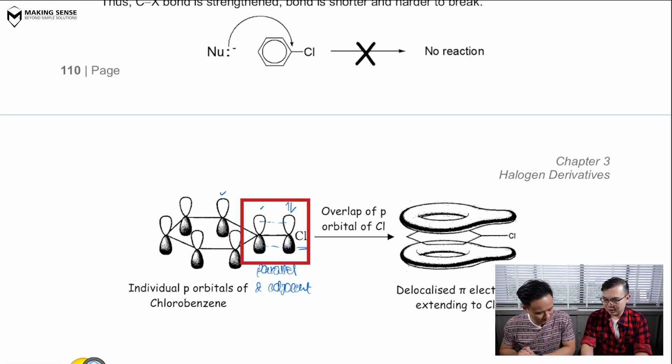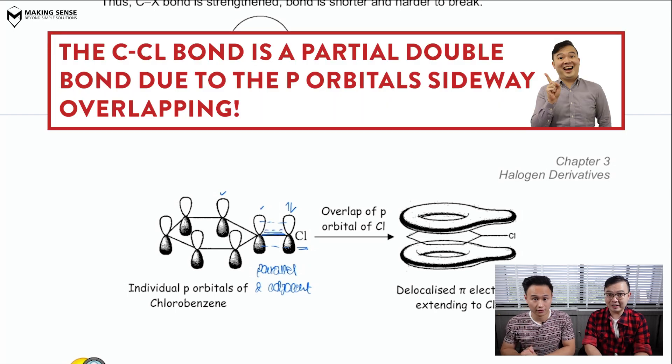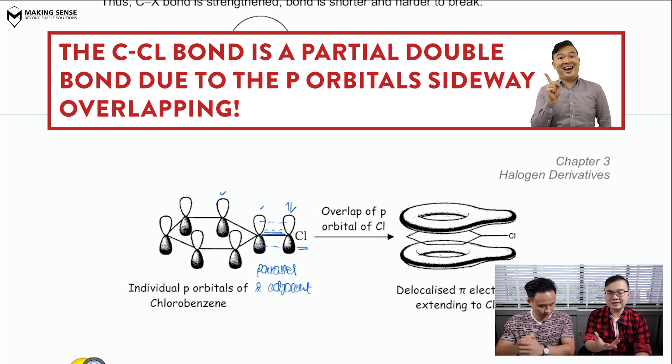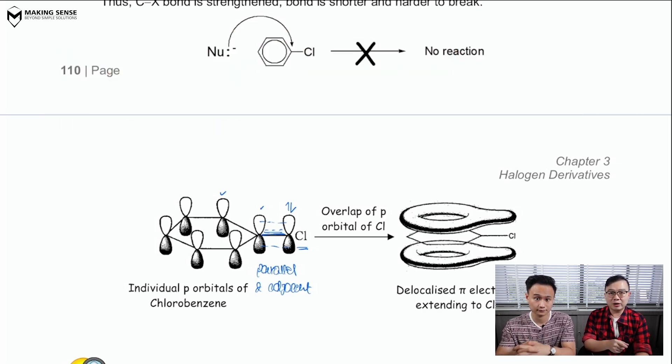Okay. So, you're going to see that now this bond over here is going to get strengthened because of the fact that you're going to achieve this thing called a partial double bond character. Right.